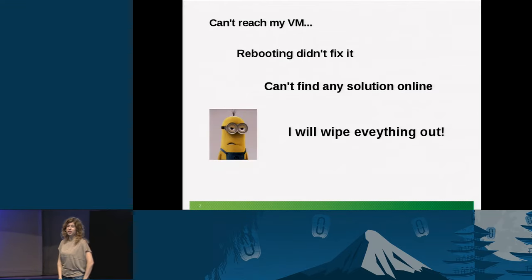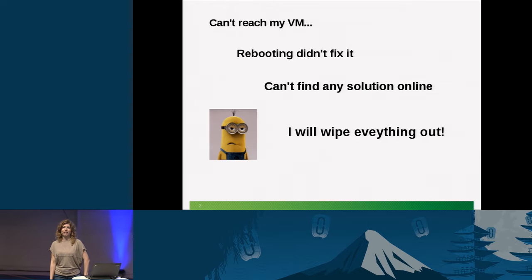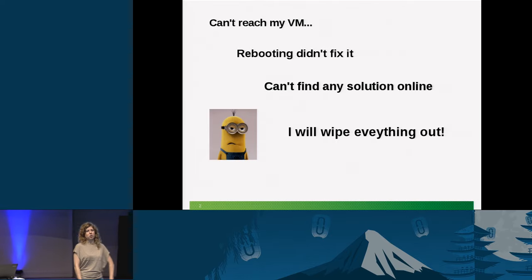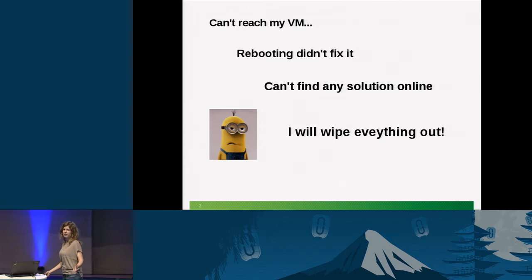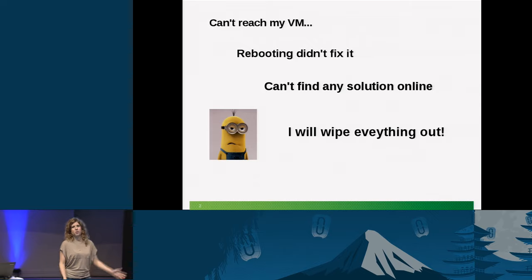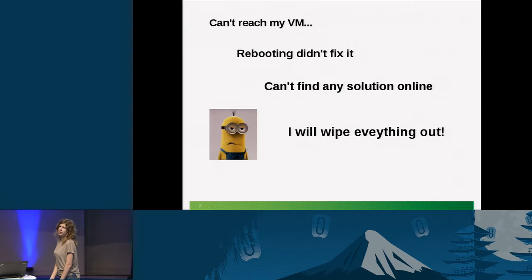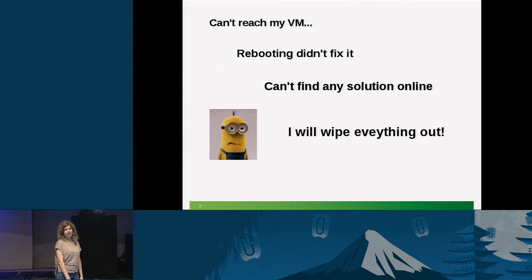When somebody comes to me with a networking problem, it's very hard to understand what's going on if you don't know much about OpenStack or Neutron. People try to fix their problem with random solutions like rebooting the VM or restarting Neutron, or any kind of weird stuff. They try to find a solution online, but it's not always there, and in the end they get very upset and want to break everything.